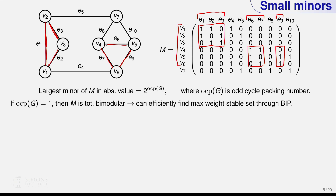The largest minor you can find in this incidence matrix equals two to the power of the odd cycle packing number — how many vertex-disjoint odd cycles you can pack in the graph. This measures how far the graph is from bipartite. In particular, if the odd cycle packing number is one, the matrix is totally bimodular — all minors between minus two and two — and we can optimize any ILP over that constraint matrix. Finding a maximum weight independent set for such graphs was actually open prior to our work.